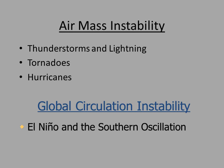Air mass instability — all that means is warm air wants to rise and it's surrounded by colder air. It keeps on rising, it'll hit the dew point temperature, releasing water from water vapor into water droplets. And that's how we get thunderstorms, lightning, tornadoes, and hurricanes. On a bigger scale, we'll talk briefly about El Niño and the Southern Oscillation.